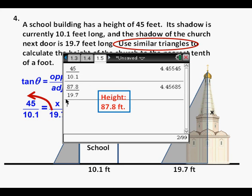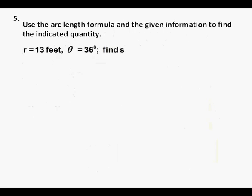To check this answer, we're looking for the tangent of one angle to be equal to the tangent of the other angle. So we have the tangent for the school, 45 over 10.1, and the tangent of the church, 87.8 over 19.7. We see that these tangents are very close. The reason they have any difference at all is probably because 87.8 was a rounded answer, so we box in 87.8 feet as our correct answer.